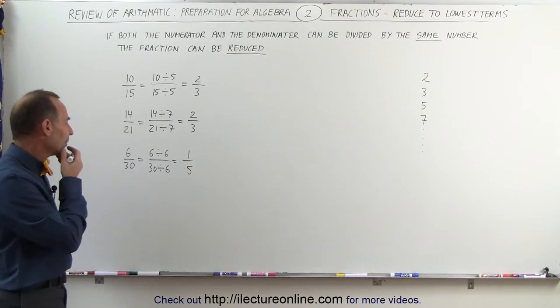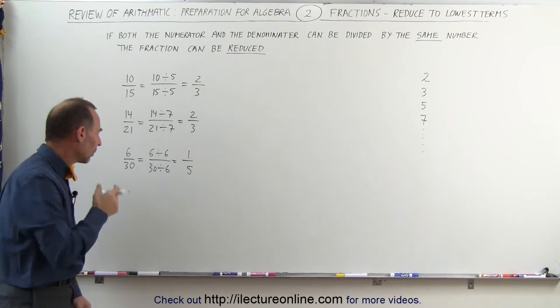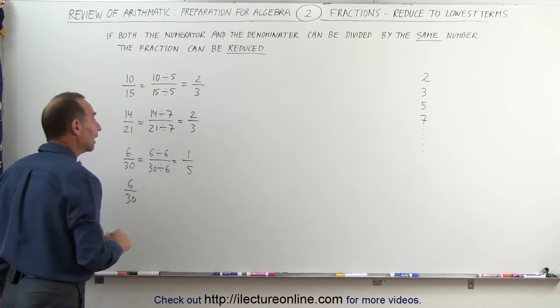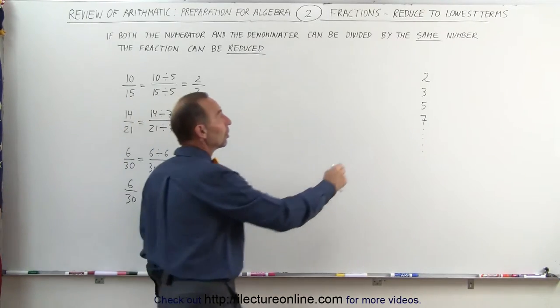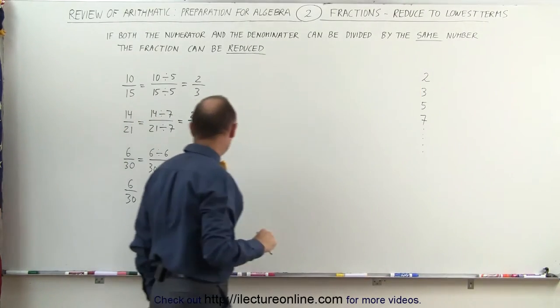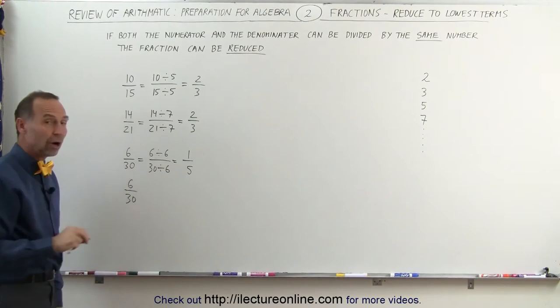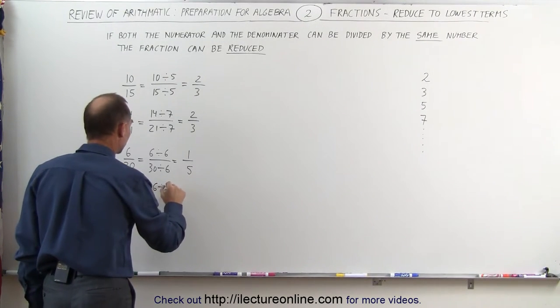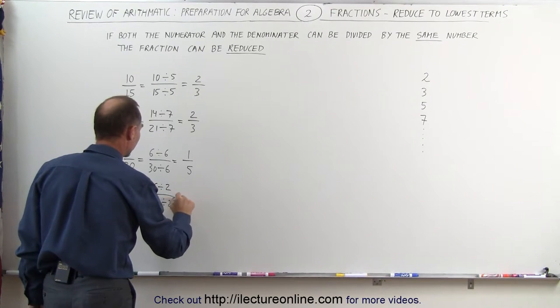Sometimes you may not see that. Sometimes you may say, well, I don't quite see that right away. That's okay. What you can do instead is start easy. Start with the number two. Take the easiest number. Notice that both six and thirty are divisible by two, which means you could write this as six divided by two, and thirty divided by two.